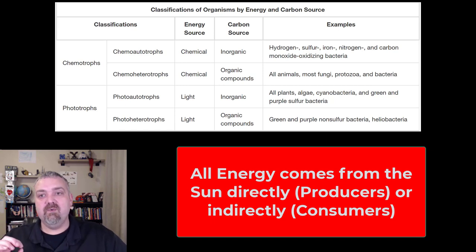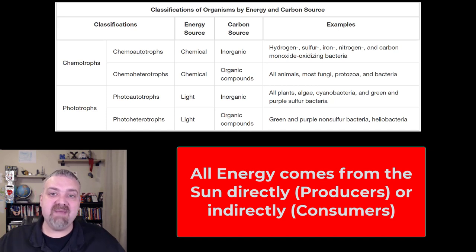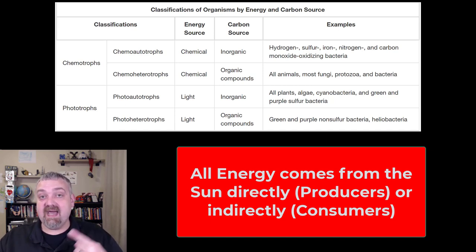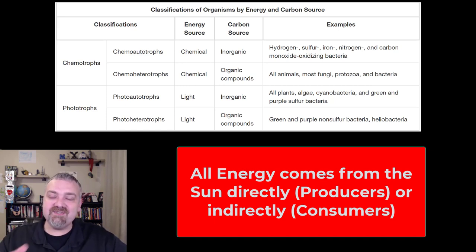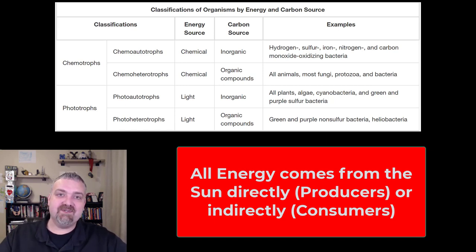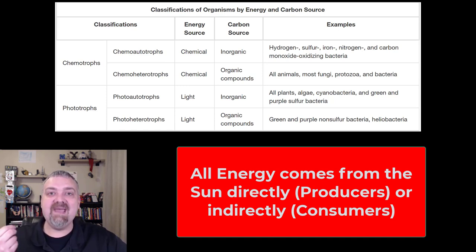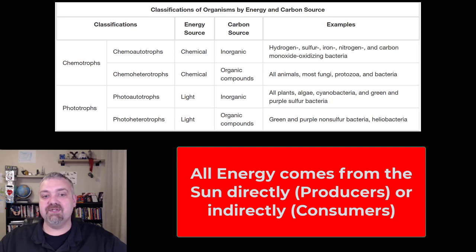We are really packets of stored sunlight energy, because all the energy in my body right now came from a plant that got its energy from the sun, or from an animal that got its energy from a plant that got it from the sun. So as a consumer, you're consuming sunlight energy — just after some intermediate has converted it into the chemical energy that you can use.